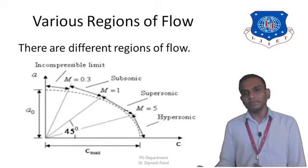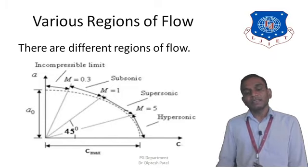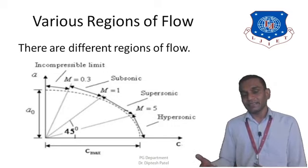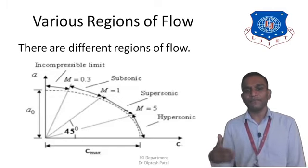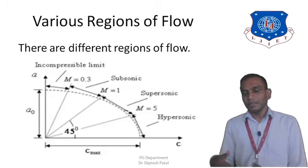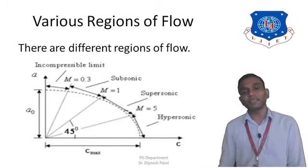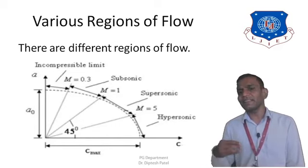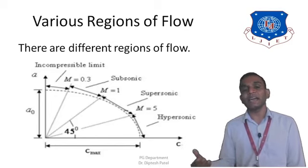Moving forward, we have the supersonic flow region. In supersonic flow the fluid velocity is higher than the velocity of sound, and therefore the Mach number lies between 1.2 and 5. Moving a little further, we fall into the hypersonic flow region. In hypersonic flow the fluid velocity is very large compared to the sound velocity, and therefore the Mach number is greater than 5.